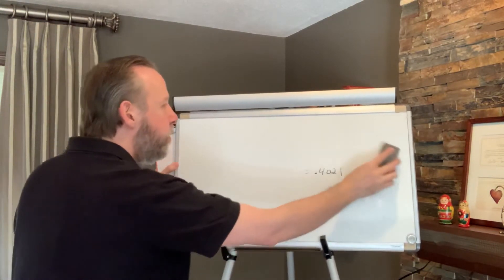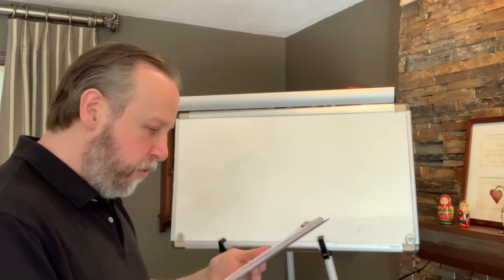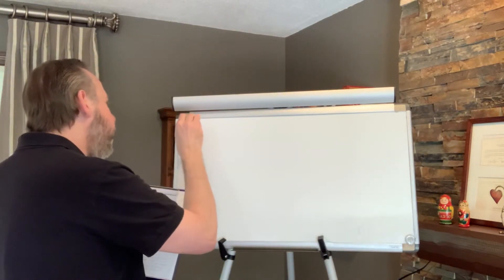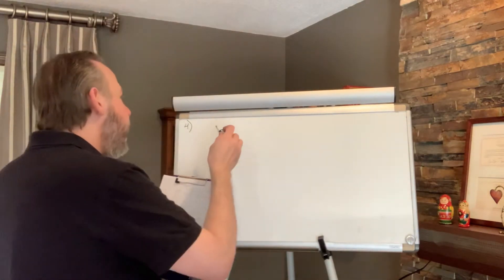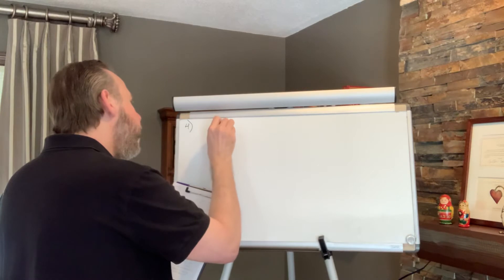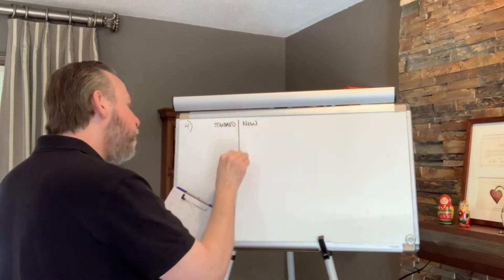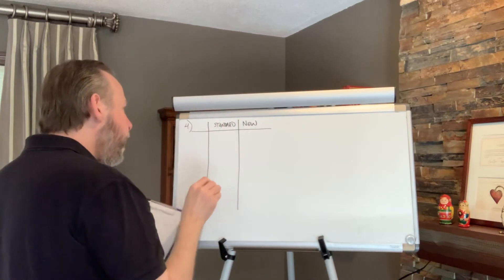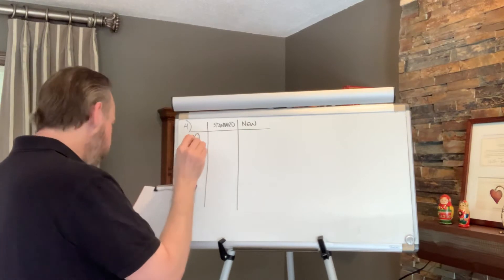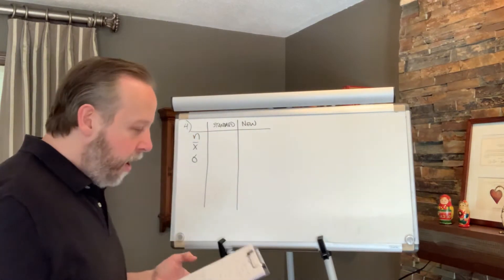Question four was a hypothesis test. It said that we have a standard method and a new method, and we want to see if the new method supports the conclusion that it was reducing ACL surgery recovery time. I like to organize things with a little table: standard surgical procedure and the new surgical procedure. For each procedure I have a sample size, a mean, and a standard deviation — the table was there for you.